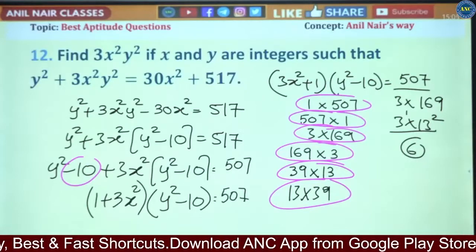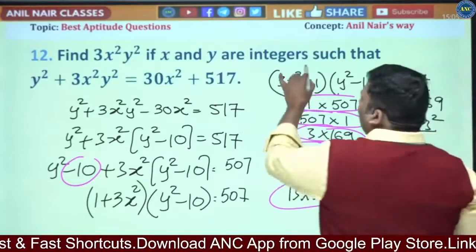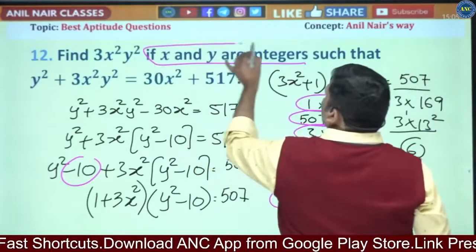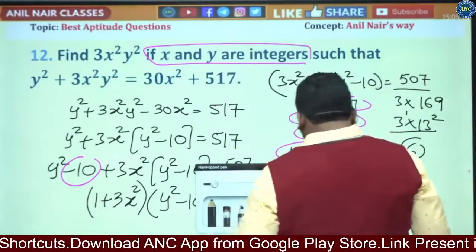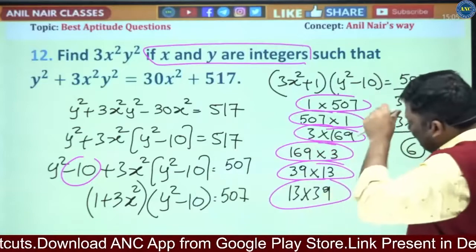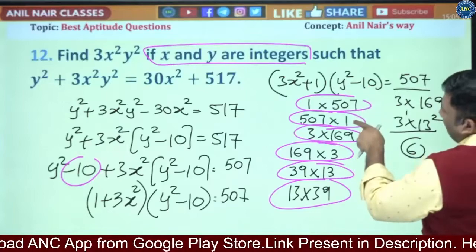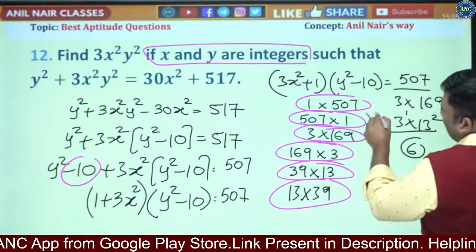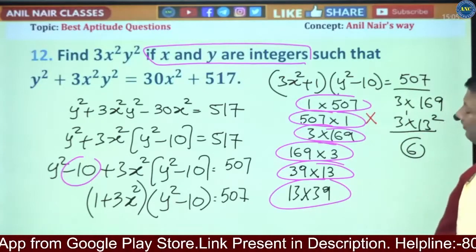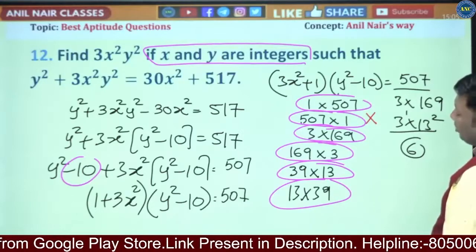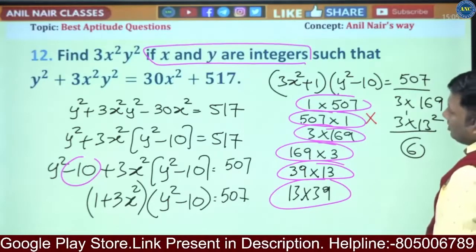What is the domain of x and y? Domain of x and y is integers. So this will become y² - 10 = 1, y² is 11. Perfect square digital sum has to be 1, 4, 7, or 9. This is out.